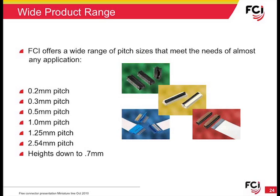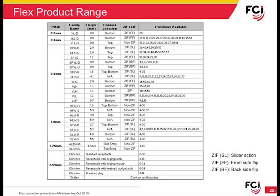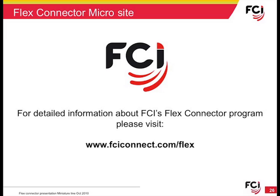As a leader in the flex connector market, FCI offers a full range of solutions from traditional larger pitch products down to 0.2 mm contact spacing for ultimate space savings, with very low profile products down to 0.7 mm in height. Our breadth of product means we have a solution for virtually any application. This slide shows a summary of FCI's most popular flex connector offerings, with a wide variety of options in pin count, pitch, height, contact location, and more. The most detailed and up-to-date product information may be found on the dedicated flex connector microsite at fciconnect.com/flex.